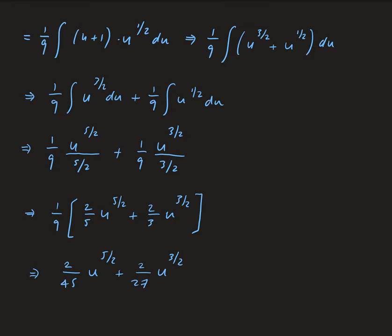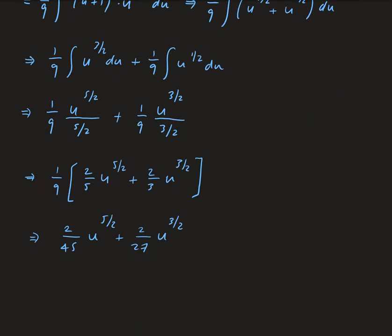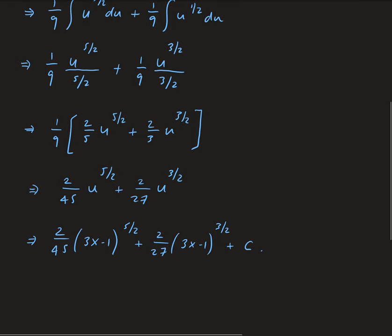Now we replace u with 3x minus 1, giving us 2 over 45 times (3x minus 1) to the five halves, plus 2 over 27 times (3x minus 1) to the three halves, plus a constant. We could simplify further from here, but this is perfectly acceptable.